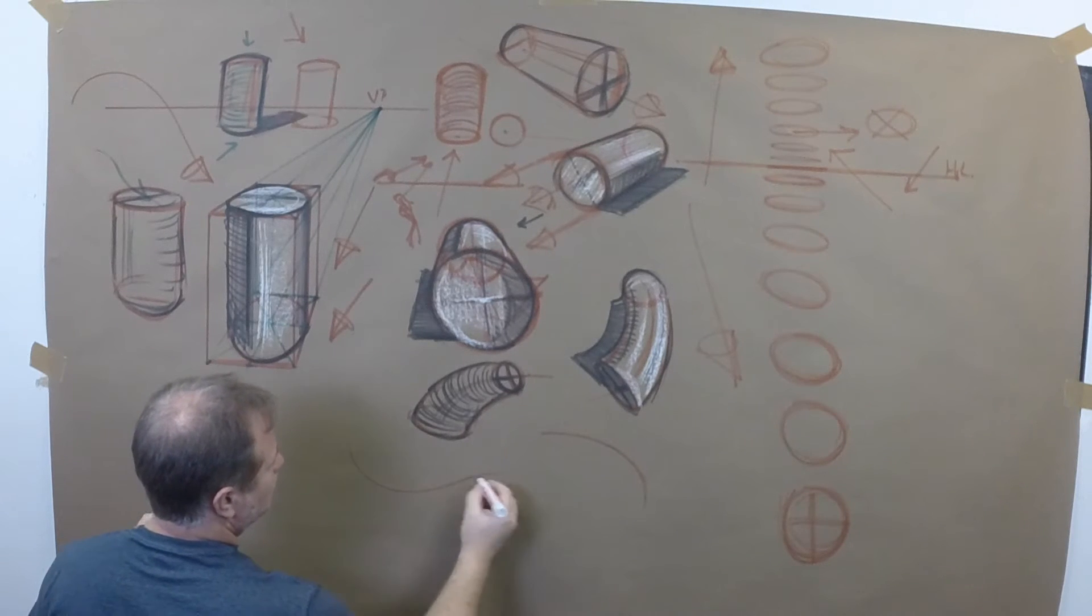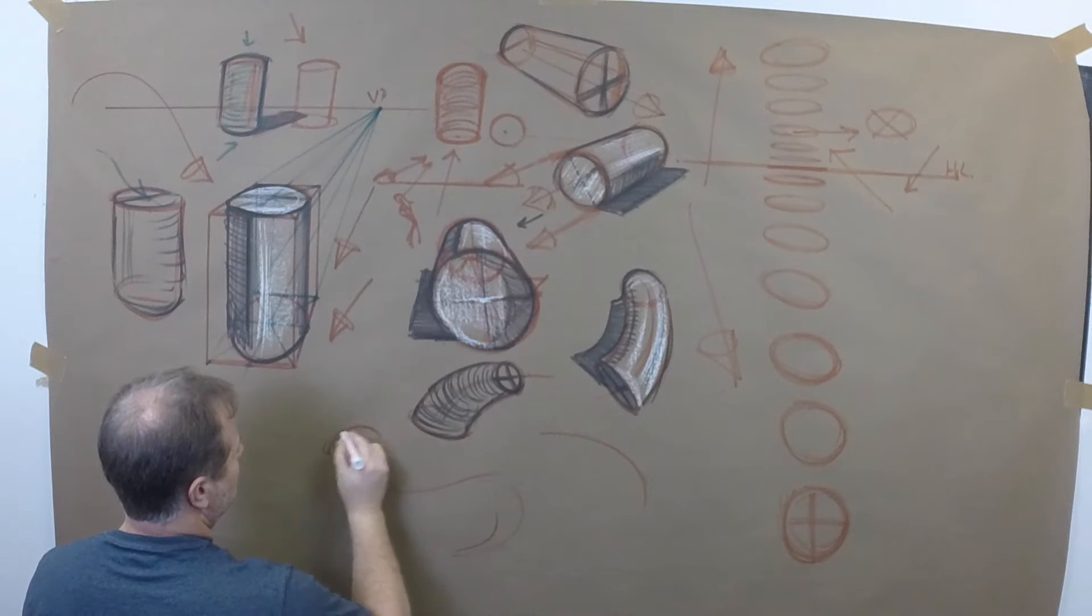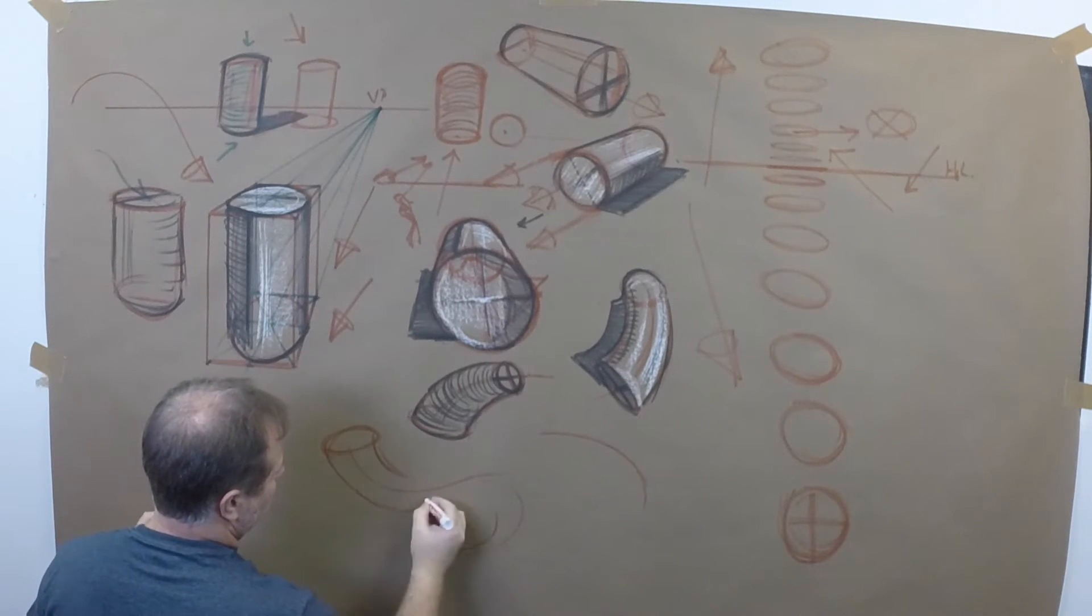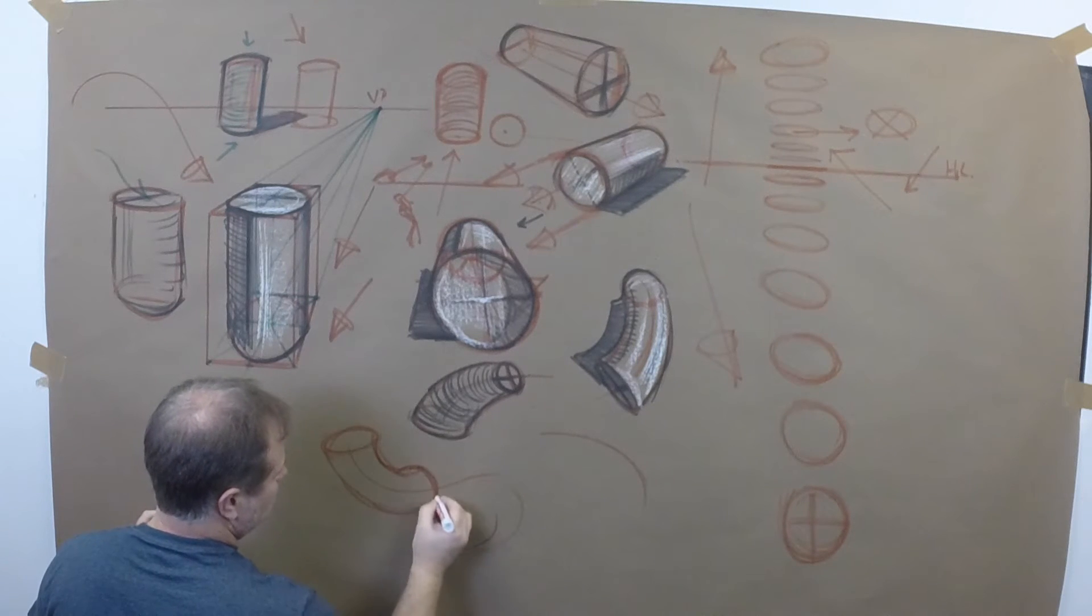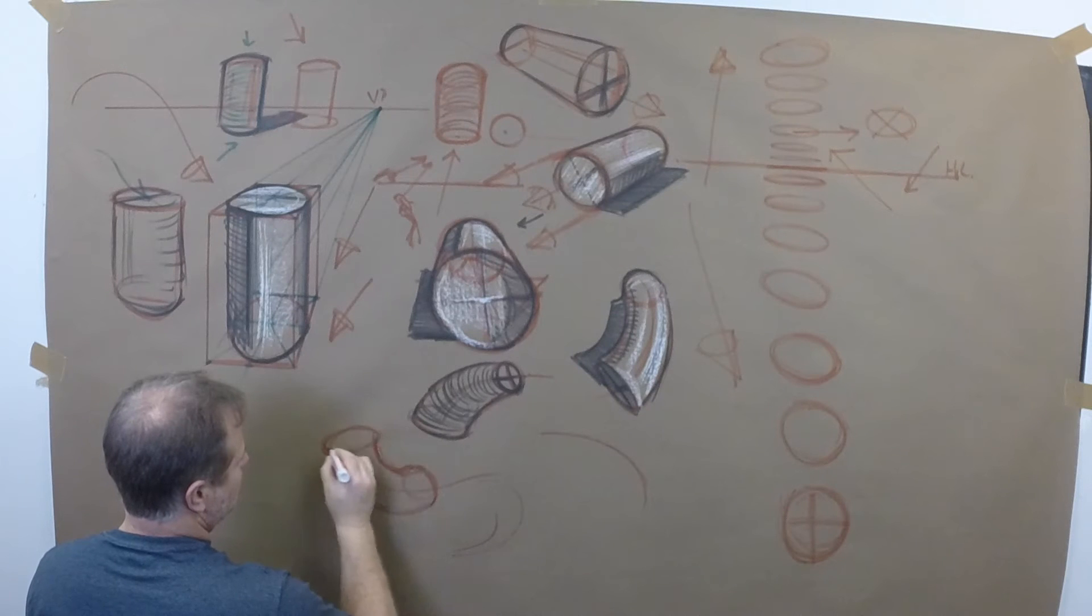Then what happens if we put maybe two together, two different ones. And so we add this coming here to there. But all of a sudden this kind of, maybe we close it here. So it gets really squeezed over there.